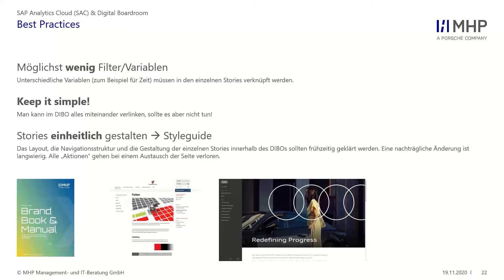Man kann wirklich nur empfehlen, was man jedem Frontend-Entwickler im ersten Gespräch empfiehlt: Fragt nach einem Styleguide. Bei uns heißt es Brandbook oder Manual – wir haben hier ein Beispiel von unserer Mutter Porsche und unserer Konzernschwester Audi. Die großen Unternehmen haben alle einen Styleguide, wo genau definiert ist, welche Farben benutzt werden, welche Schriften, wo das Logo hingesetzt wird und in welchem Abstand. Damit man keine Brüche hat, wenn man verschiedene SAC-Stories aus verschiedenen Ressorts zusammenbringt.